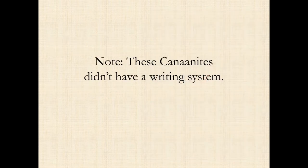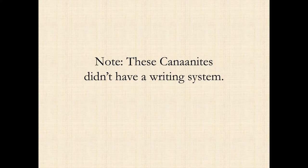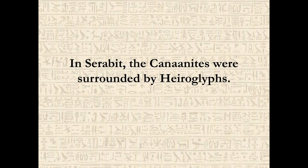It's important to note that these Canaanites didn't have a writing system of their own. They had a perfectly beautiful language, but they did not have the ability to write it. There are still languages today that don't have writing systems, and that was the case then. In Serabit, the Canaanites were surrounded by hieroglyphs. We can imagine that at some point they might walk over to some of these beautifully carved stones, point to an image, and ask an Egyptian: what is this? What does this mean?